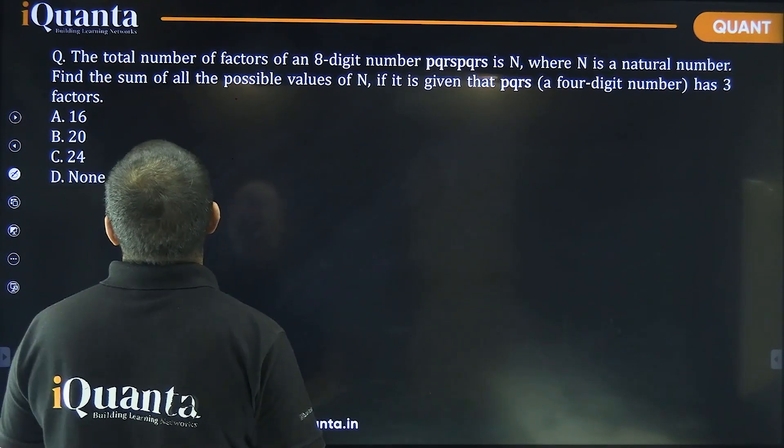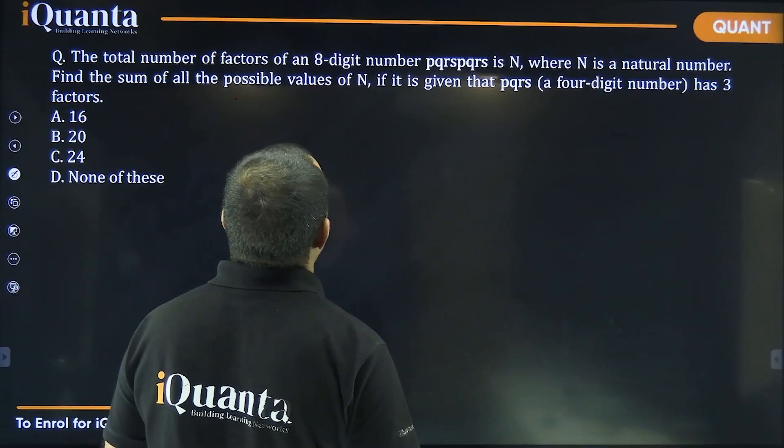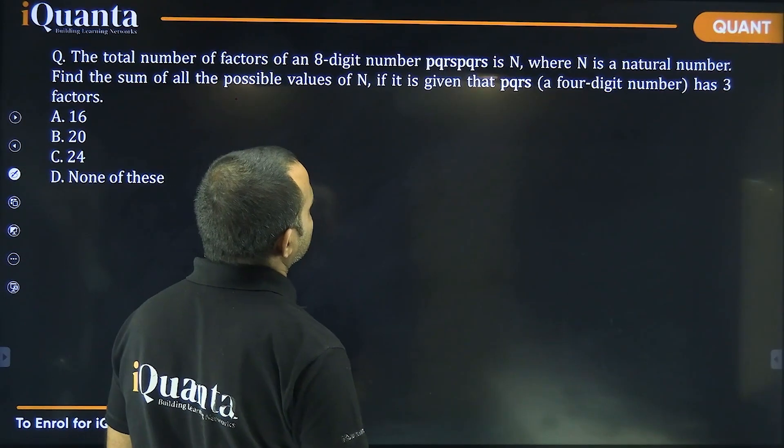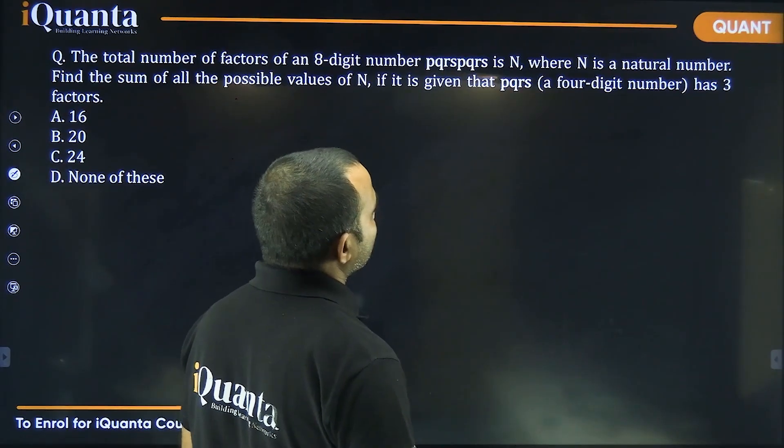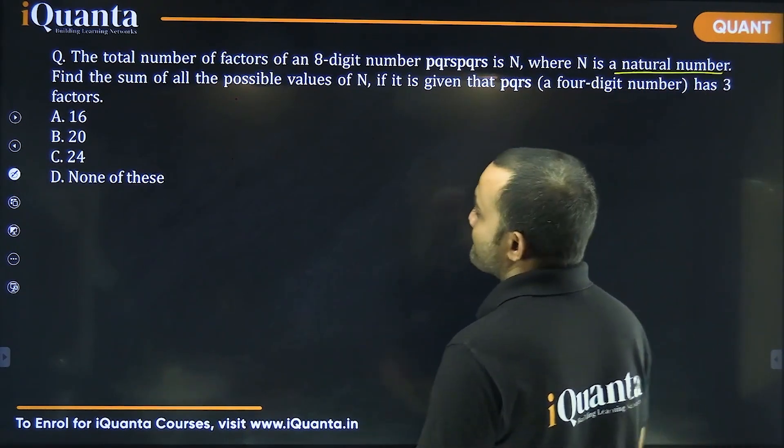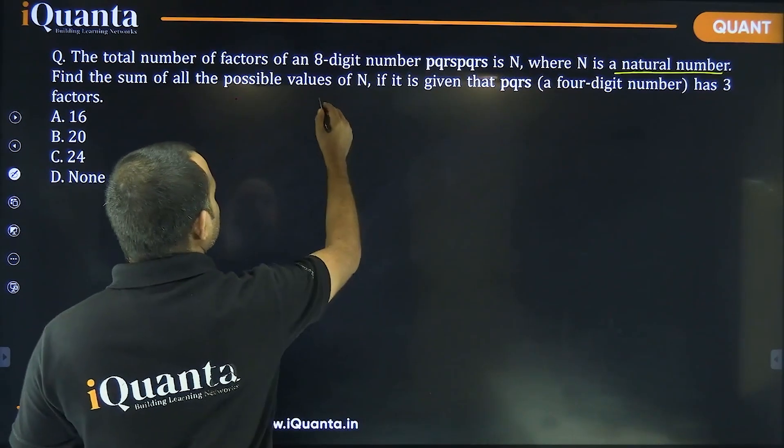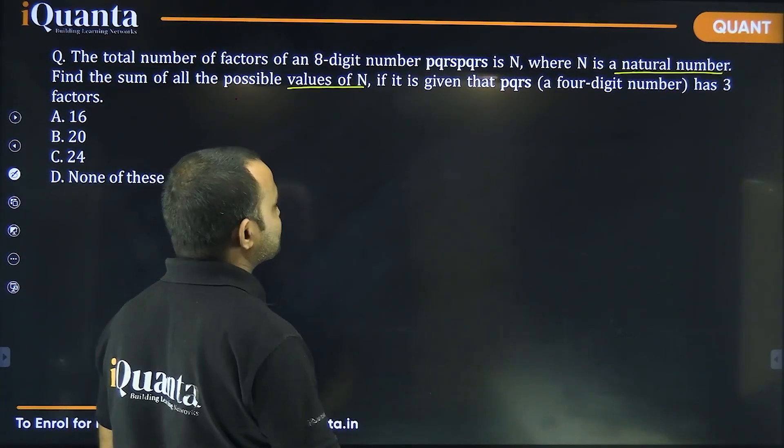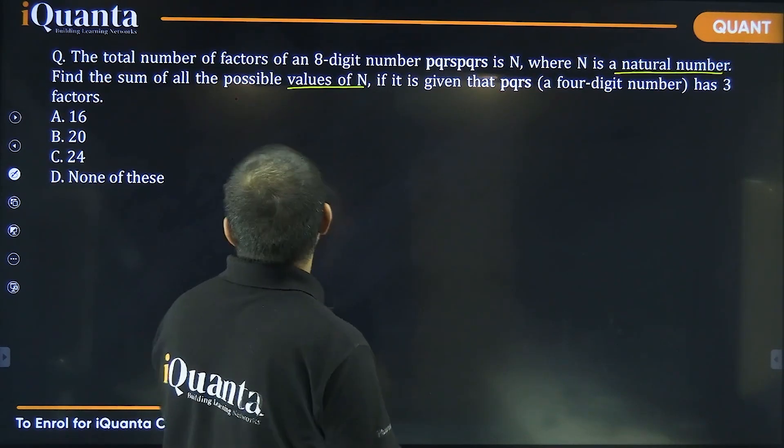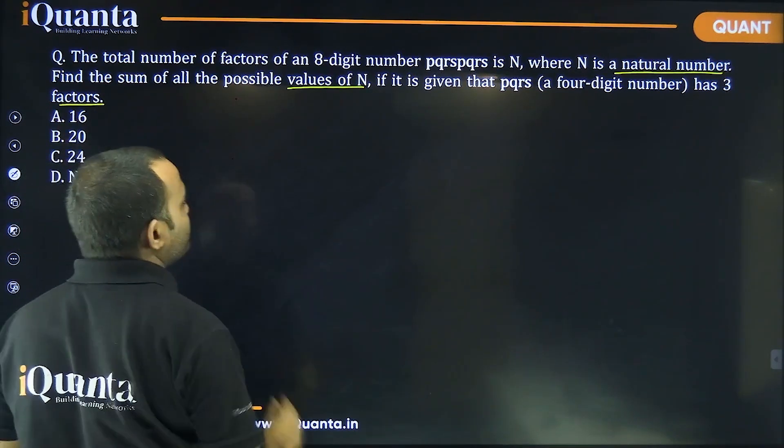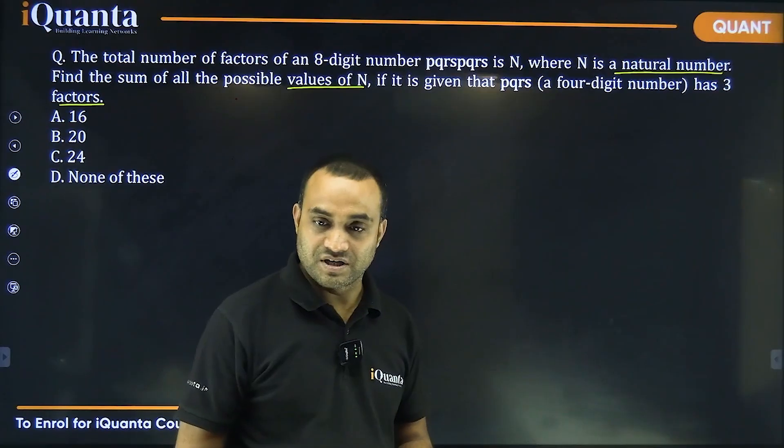This question says the total number of factors of an eight digit number PQRSPQRS is n, where n is a natural number. Find the sum of all the possible values of n, if it is given that PQRS, a four digit number, has three factors.